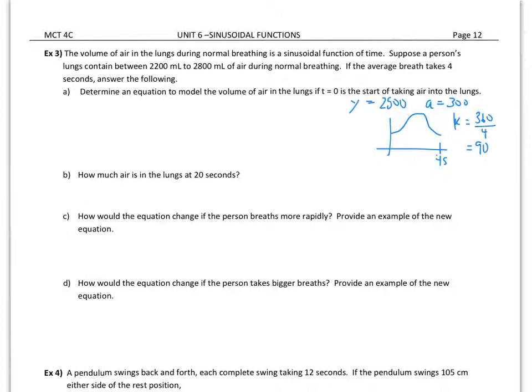Now because this starts at a minimum value, I'm going to make that a negative cos curve. V for volume based on time t. T will be time in seconds. We're going to have an amplitude of 300. I'm going to use a negative, the reflection, to begin the cos at the lowest point. We're going to have 90 as our k value, and we don't have to worry about a phase shift, and our axis of the curve is at the 2500 mark. I'll type in my let statements.